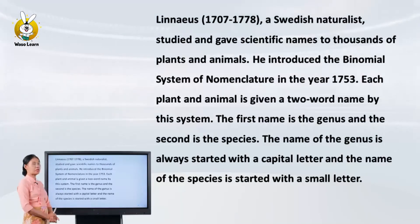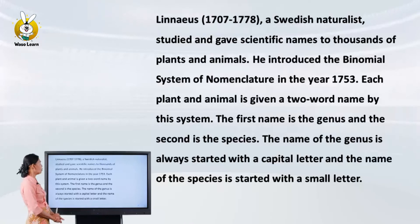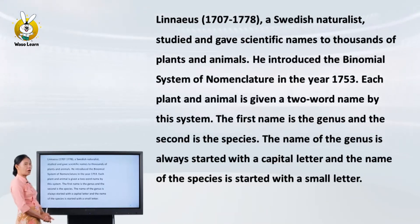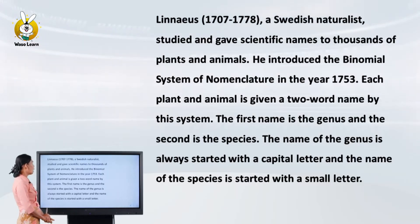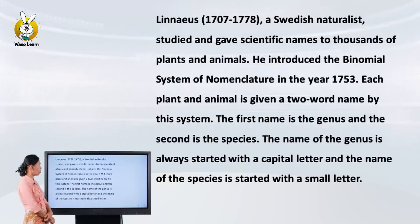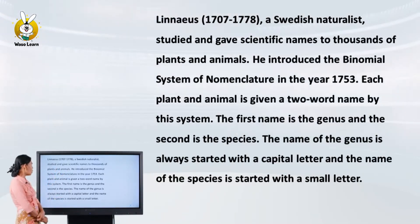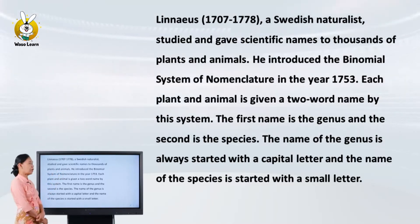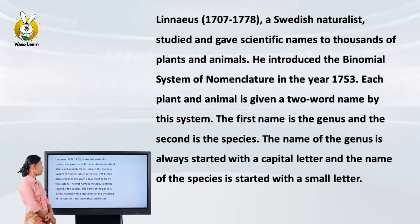Linnaeus (1707–1778), a Swedish naturalist, studied and gave scientific names to thousands of plants and animals. He introduced the binomial system of nomenclature in the year 1753. In the binomial system of nomenclature, each plant and animal is given a two-word name.